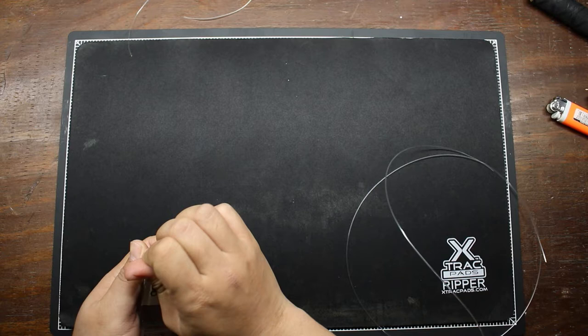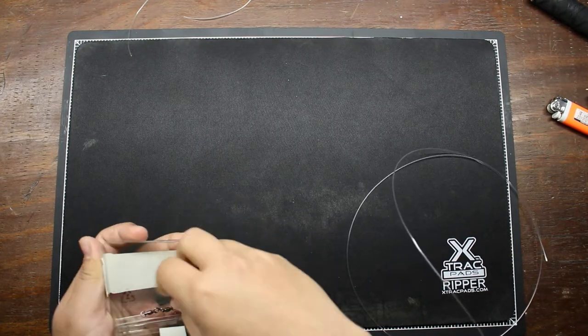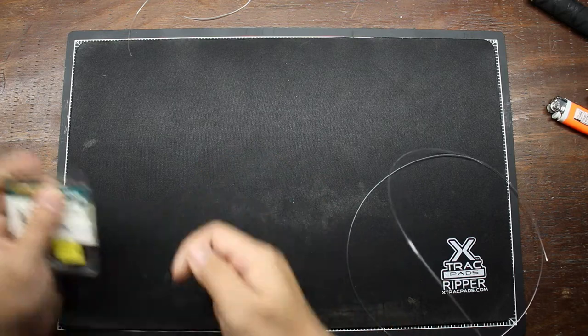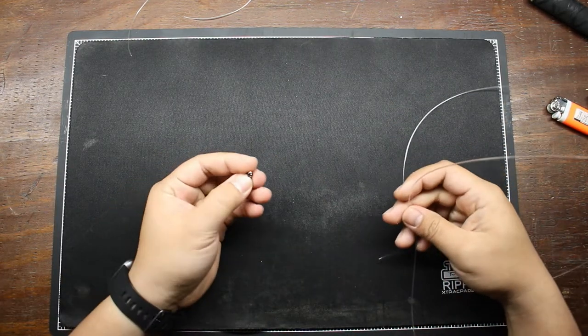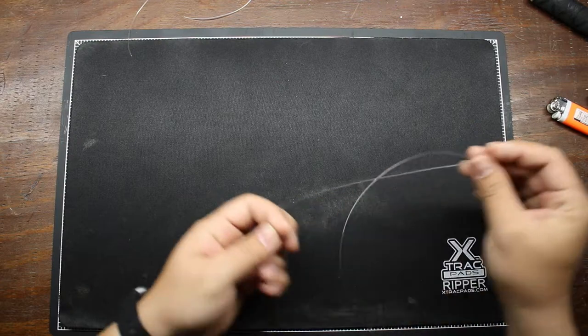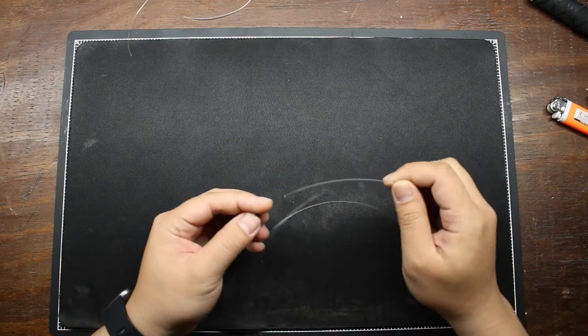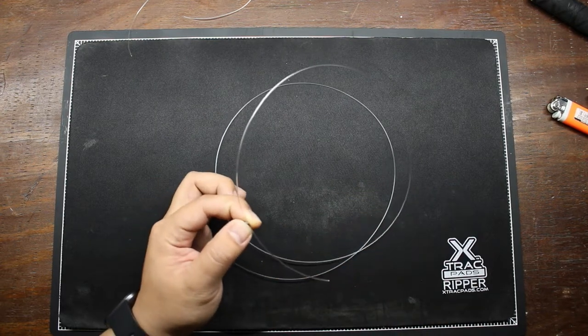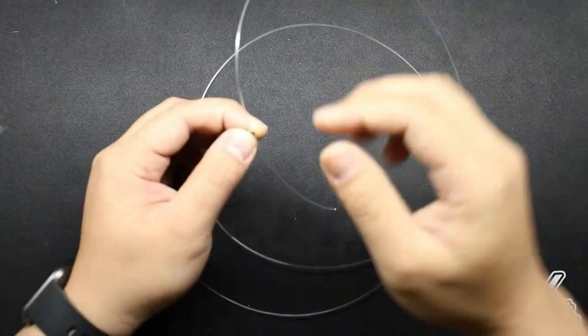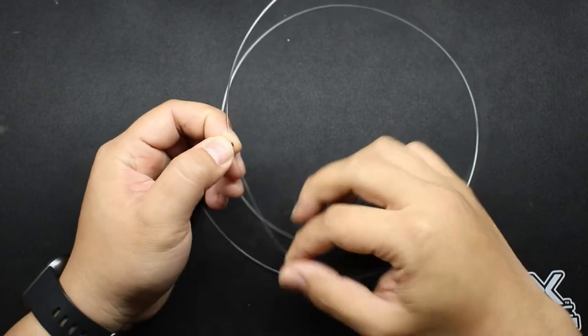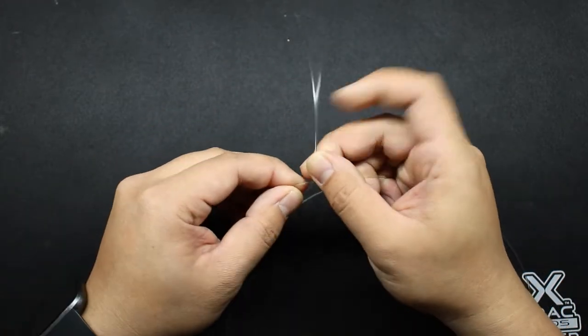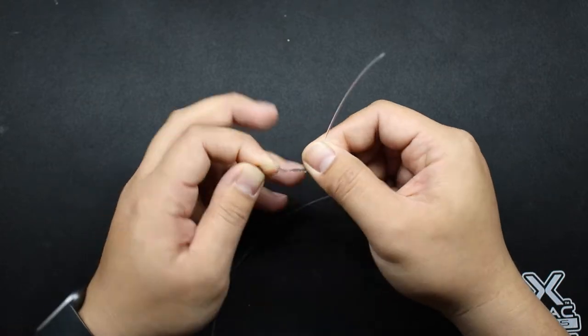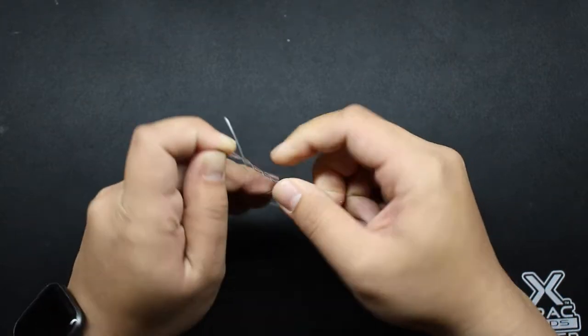First thing I'm going to do is get a 50 to 80 pound clasp swivel. And this is how I'm going to make the knot for it. I'm going to go through it and twist around about four times. Two, three, four.